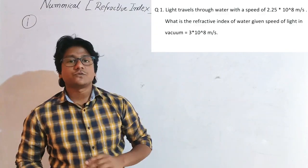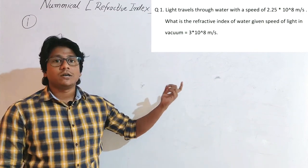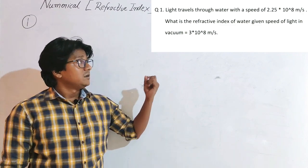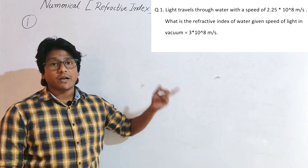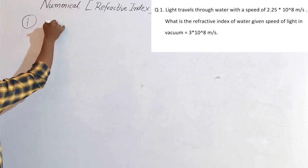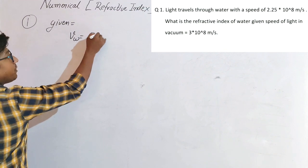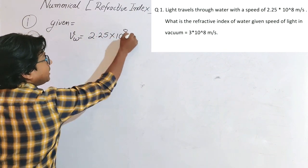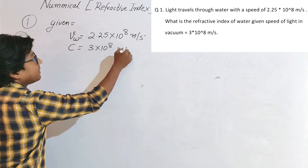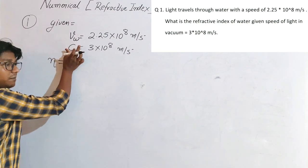Let's see the first numerical. The question on screen is: a light ray passes through water with the speed of 2.25 × 10⁸ meters per second. If the speed of light C is equal to 3 × 10⁸ meters per second, calculate the refractive index of water. So the given data is: speed of light in water VW = 2.25 × 10⁸ m/s, and speed of light C = 3 × 10⁸ m/s.